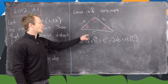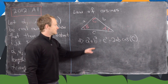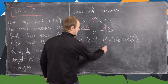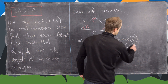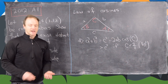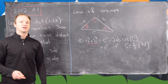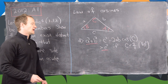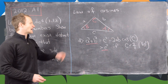If side length c is the longest length, then angle C will be the biggest angle. This means a squared plus b squared is bigger than c squared if C is less than pi over 2 — in other words, 90 degrees. So if we have an acute triangle, the sum of the squares of the two shorter lengths is strictly greater than the square of the larger length.